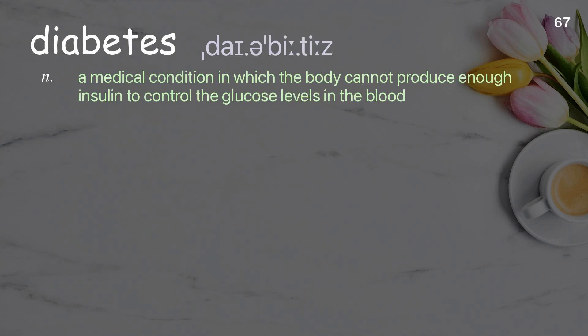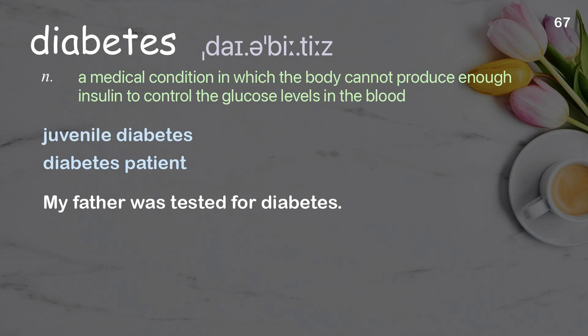Diabetes. A medical condition in which the body cannot produce enough insulin to control the glucose levels in the blood. Examples: juvenile diabetes, diabetes patient. My father was tested for diabetes.